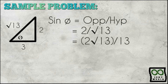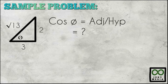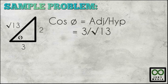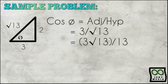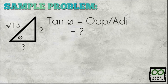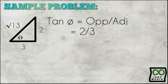Next, the value of cosine theta — adjacent over hypotenuse — giving you 3 over the square root of 13. By rationalizing the denominator, the result is 3 square root of 13 over 13. For tangent theta — opposite over adjacent — the ratio is two thirds.